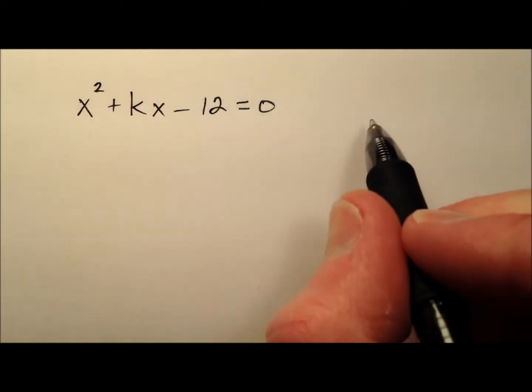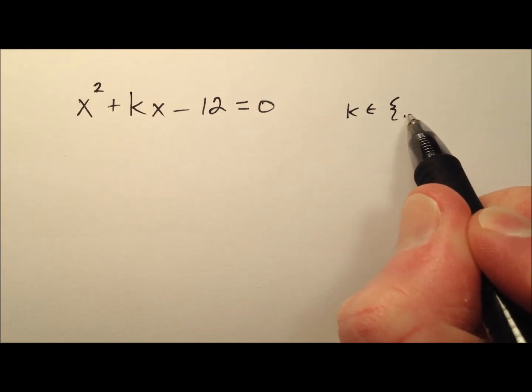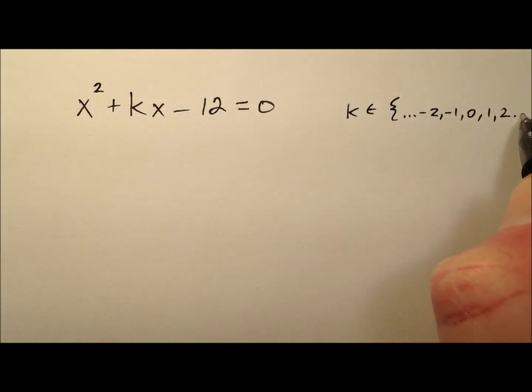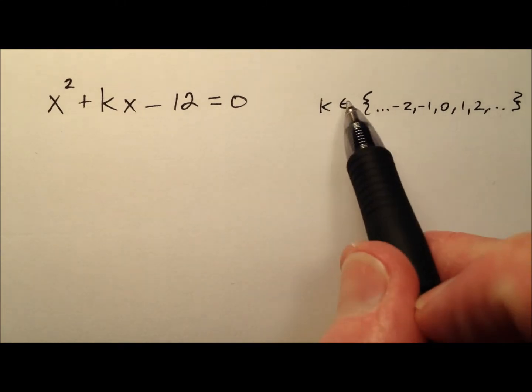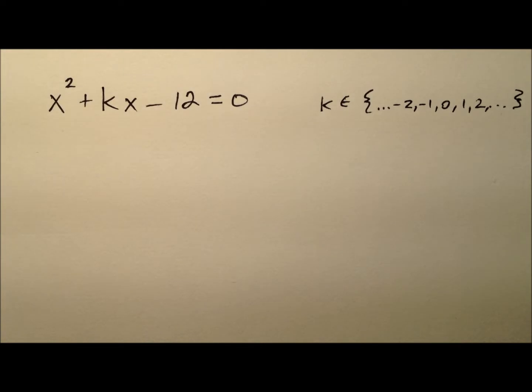That means k needs to be a member of the set of integers: negative 2, negative 1, 0, 1, 2, and so on. Integers can be negative, zero, or positive—essentially whole numbers with their opposites.